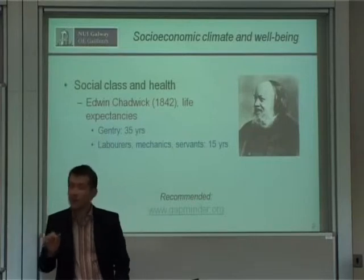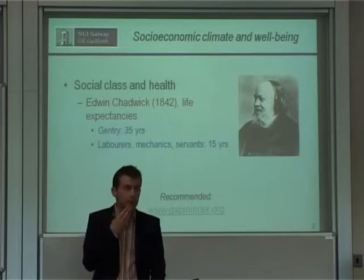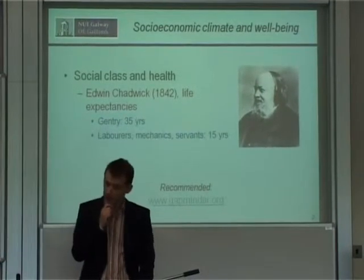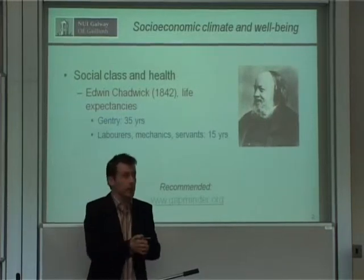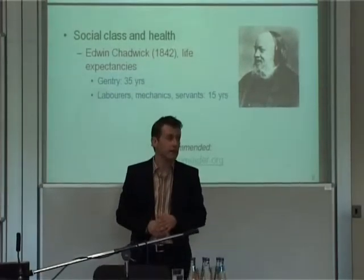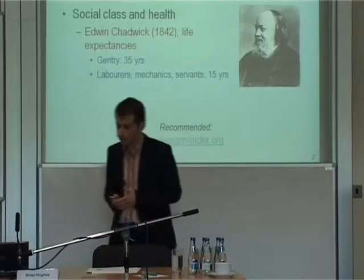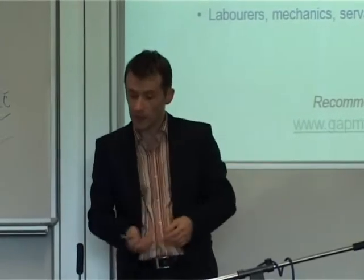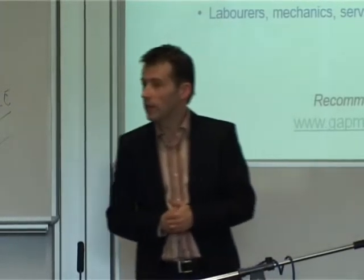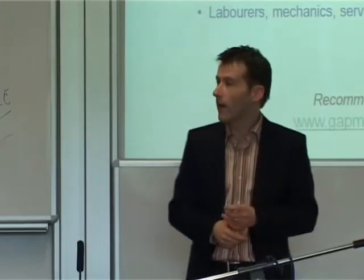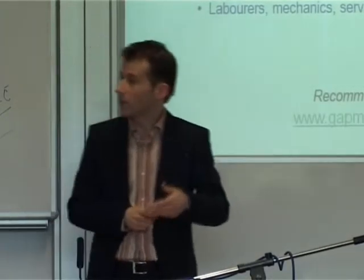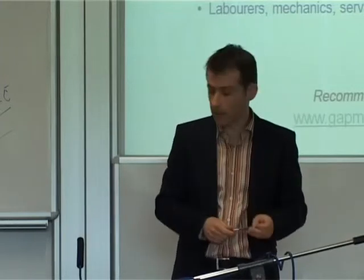A psychologist will tell you that human wellbeing can be quantified in a particular type of questionnaire, but there are other indices as well. One early example of social science research with a big public policy implication relates to our understanding of the factors explaining the relationship between social class and health. Sir Edwin Chadwick described how differing classes had differing life expectancies: the gentry had an average life expectancy of 35 years, whereas labourers, mechanics, and servants had an equivalent statistic of 15 years — a quantitative reality with clear public policy implications.